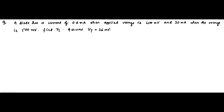Here we have another question on the diode current equation. A diode has a current of 0.6 milliampere when the applied voltage is 400 millivolt, and 20 milliampere when the applied voltage is 500 millivolt. We have to find the ideality factor eta, and the thermal voltage. It has been asked to take 26 millivolt as that value.